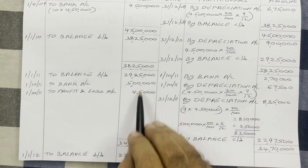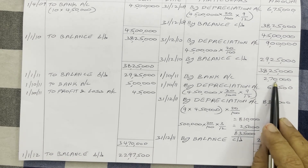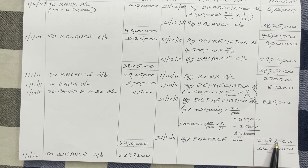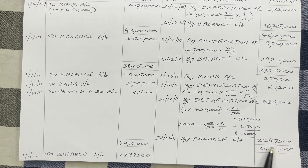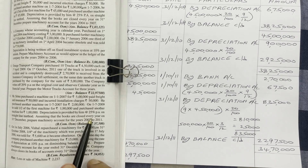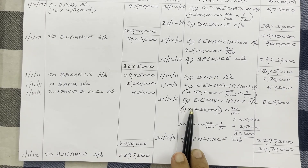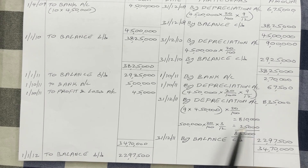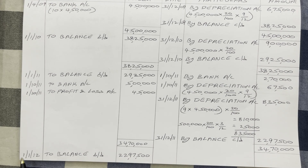Now find the balance carried down. Debit total Rs 34,70,000 minus credit amounts Rs 2,70,000 + Rs 67,500 + Rs 8,35,000 = Rs 22,97,500. Write balance carried down. Two sides highest total: Rs 34,70,000. In 2011 there is a balance of Rs 22,97,500 — the asset account is not yet closed. Therefore bring the balance to the next date: 1st January 2012, balance brought down Rs 22,97,500.